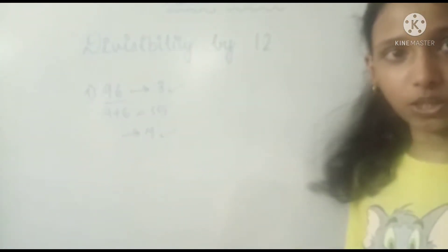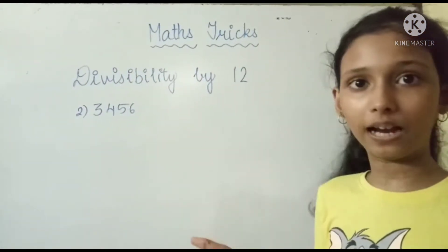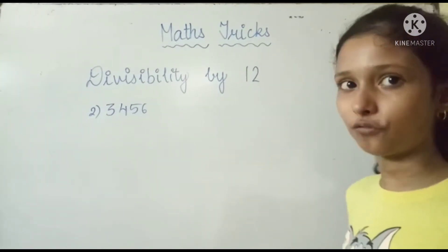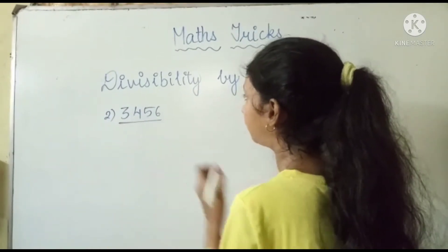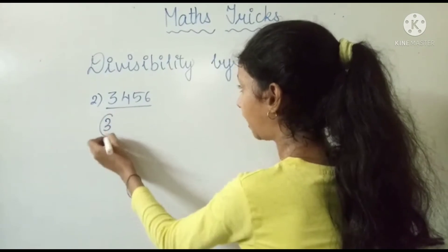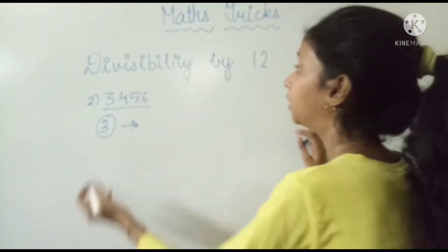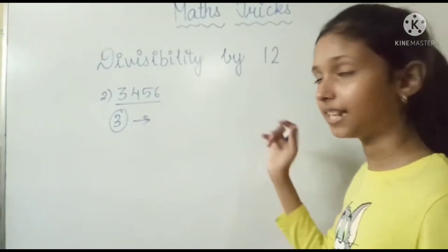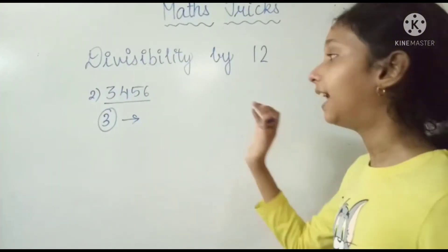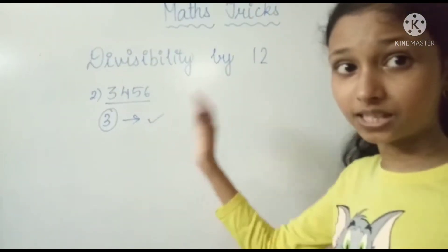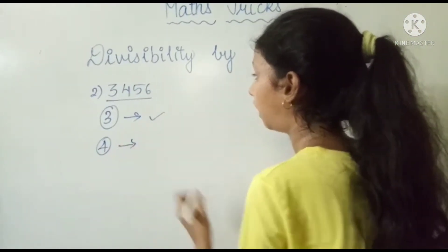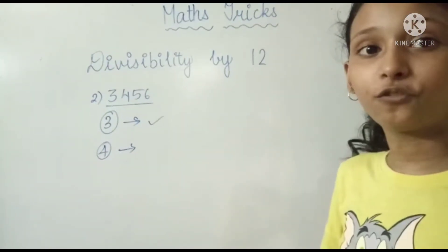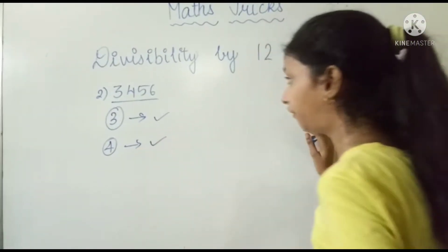Let's take a bigger number: 3456. First, check divisibility by 3: 3 plus 4 is 7, 7 plus 5 is 12, 12 plus 6 is 18, and 1 plus 8 is 9 — so it is divisible by 3. Next, check divisibility by 4: the last two digits are 56, and 14 fours are 56 — so this is also fulfilled. Therefore, 3456 is divisible by 12.